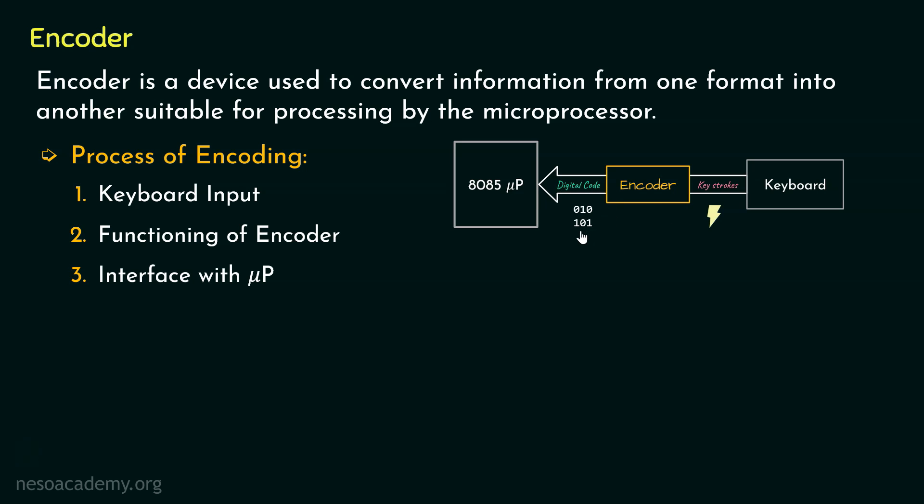Now once the digital data representing the pressed key is received by the microprocessor, it then can process this information according to the program written in its memory. This is known as processing by the microprocessor.